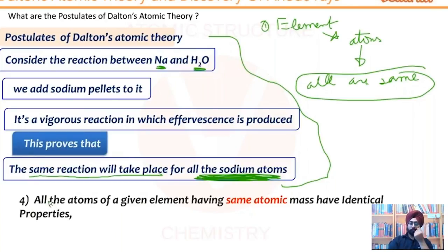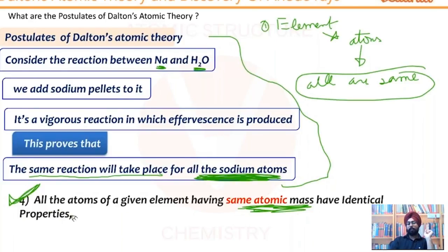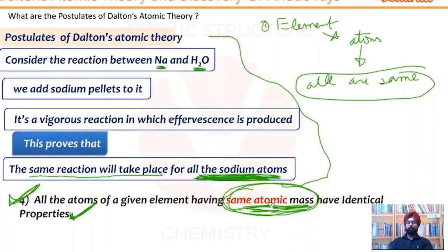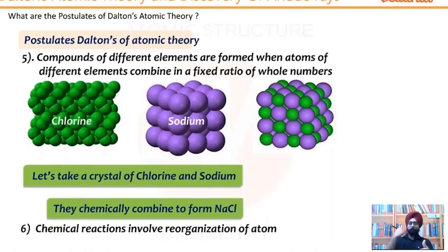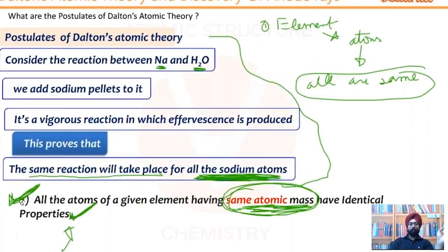No matter where this sodium atom comes from, as long as it is a sodium atom, it will have the same properties. All the atoms of a given element having the same atomic mass have identical properties. Ultimately, what Dalton has done is taken the second and third postulate and made a bigger postulate out of that. Siddharth asks about isotopes — we will come to isotopes later. At the time of Dalton, isotopes were not discovered. Since you are making a theory, you want to be as detailed as possible — that's why this postulate exists.